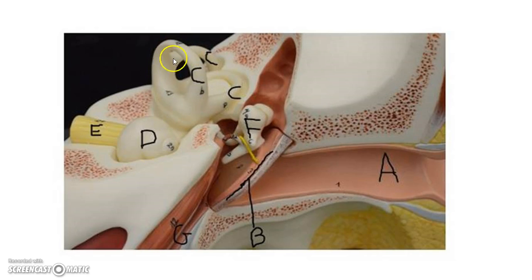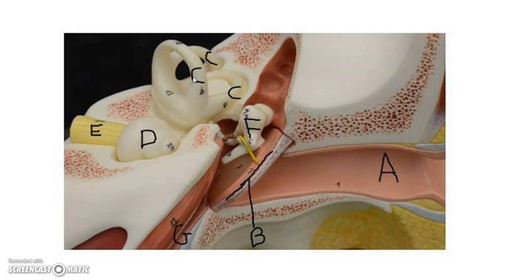Back to the balance structures. These three structures are the semicircular canals. What the semicircular canals do in terms of balance is monitor the rotational movements of the head. You'll notice they go in every direction — as you move, the fluid in the semicircular canals swooshes back and forth. Hair cells will fire action potentials depending on the rotation and movement of your head, sending that signal down the vestibular cochlear nerve to tell the brain where your head is rotating.